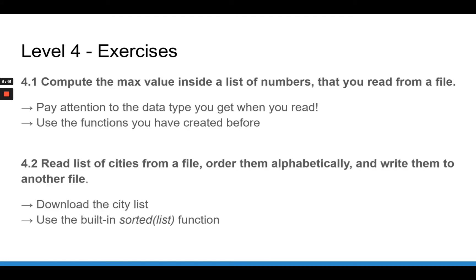The second exercise is to read a list of cities from a file, order them alphabetically, and write them to another file. You can download the city list as an additional resource of the course. Put it somewhere in your computer and use either the relative or the absolute path. To sort the list alphabetically, you don't need a complex algorithm — simply use the built-in sorted function, which takes one parameter, the list you want to sort, and returns the sorted list. Take the time to do the exercises and I will see you in the next lesson for the solution.